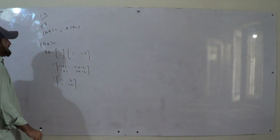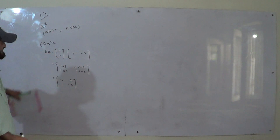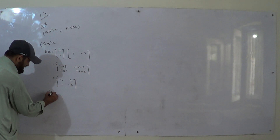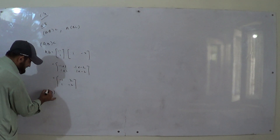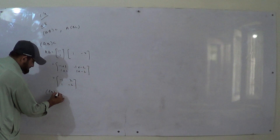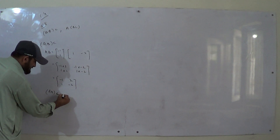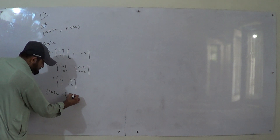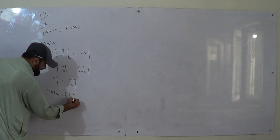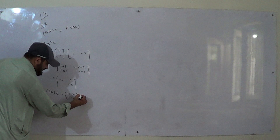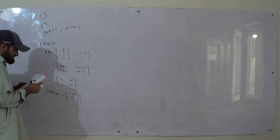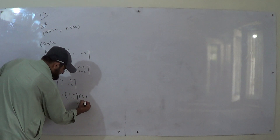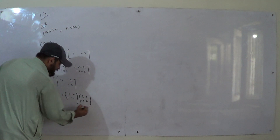Now we multiply with C. The answer of AB is [-1, 2, 1, -2]. We multiply with C, which is [3, 1, -1, 2].